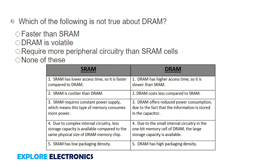Which of the following is not true about DRAM? We need to understand DRAM and SRAM characteristics. Is DRAM faster than SRAM? DRAM is volatile and requires more peripheral circuitry than SRAM cells. If you observe the difference: SRAM has lower access time, meaning it is faster compared to DRAM, while DRAM has higher access time — it is slower than SRAM. So the statement 'DRAM is faster than SRAM' is not true.